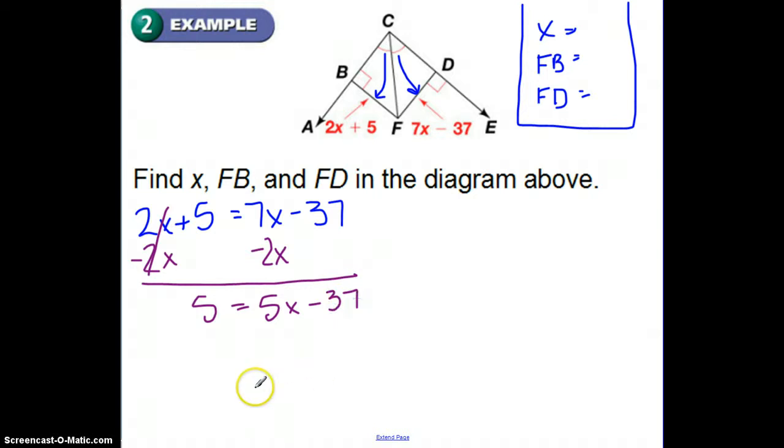I know some of you are already thinking, this isn't going to come out evenly. You can just tell already. So I'm going to add 37 to both sides. So on this side, it's 42 equals 5X.